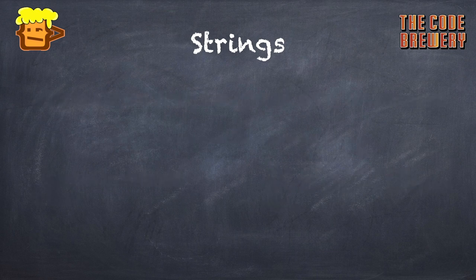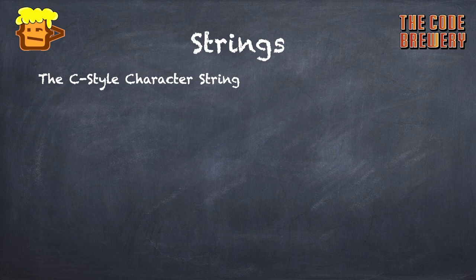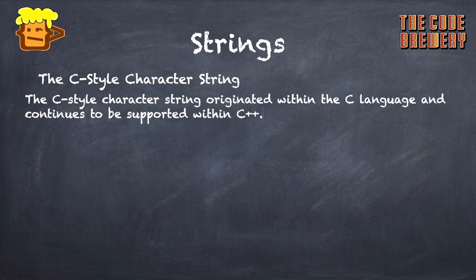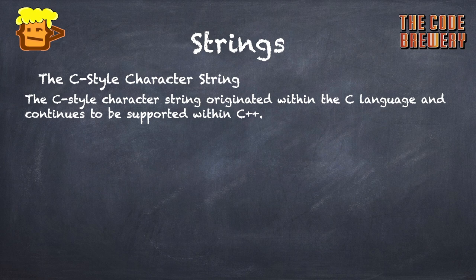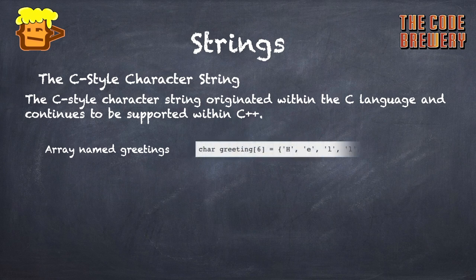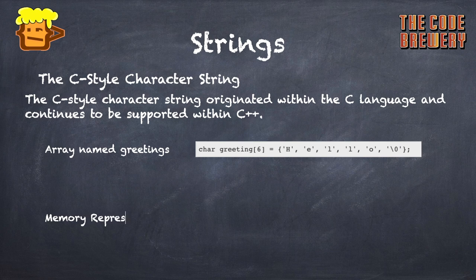First we'll talk about the C-style character string. The C-style character string originated within the C language and continues to be supported within C++. This string is actually a one-dimensional array of characters which is terminated by a null character \0. Thus a null-terminated string contains the characters that comprise the string followed by a null.